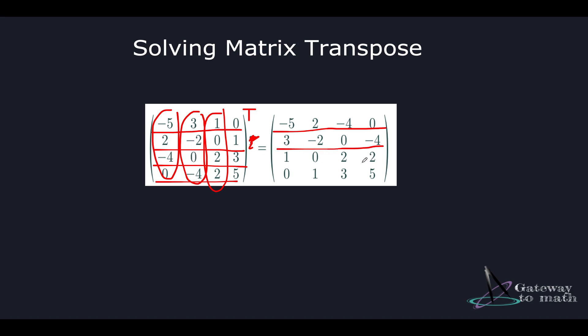Now the values in the third row in the original matrix equals minus 4, 0, 2, 3. We'll replace it with the entries in the third column which is 1, 0, 2, and 2.